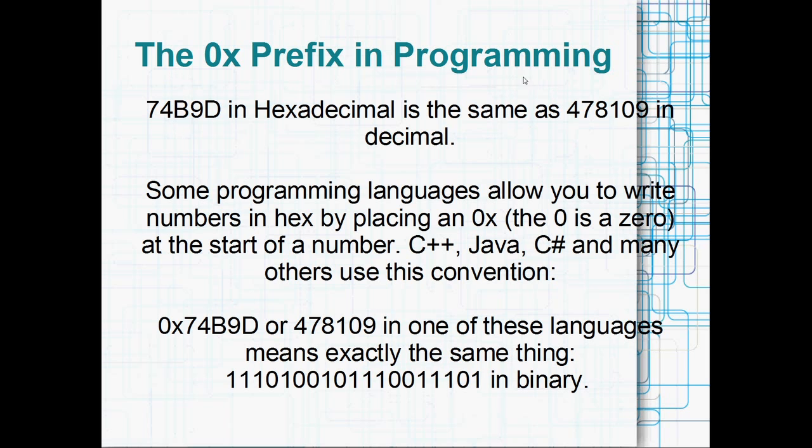If you're programming, if you're learning this for programming, you can often write in C++, Java or C#, a little 0x beside your number. And then the computer will read it as hexadecimal. That's the hexadecimal suffix or prefix right there. 0x74B9D. The computer will read that as 478,109.